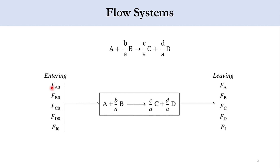The entering flow rates in the system are FA0. As you recall from our previous lecture, the subscript zero denotes inlet. FA0 is the initial molar flow rate of A at the inlet of the reactor, while FA is the final flow rate of A. Similarly, FB0 is the initial flow rate of B, FB is the final flow rate. A and B are consumed in the system, while C and D are produced, and I is inert.